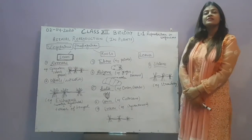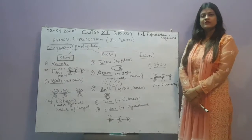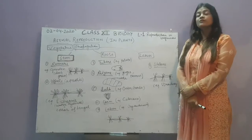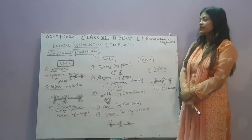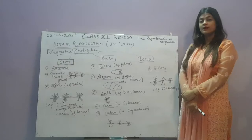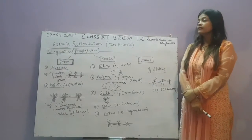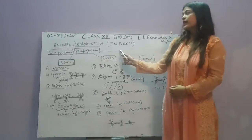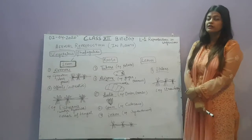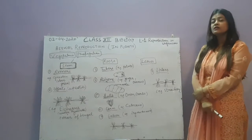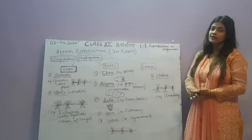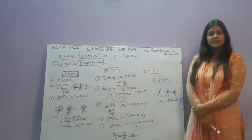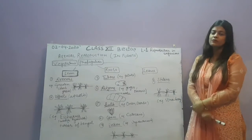Hello students, in the previous class of Class 12 Biology we started with the first chapter, Reproduction in Organisms. In the first video we discussed the introduction as well as asexual reproduction in animals. Now we will discuss in detail about asexual reproduction in plants. The process of asexual reproduction in plants is called vegetative propagation.